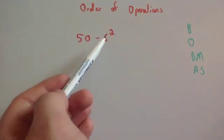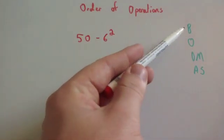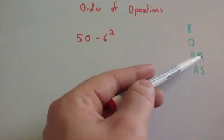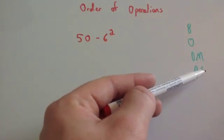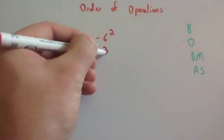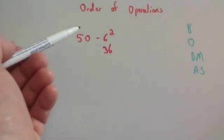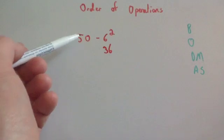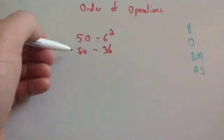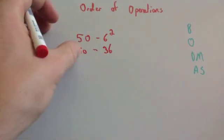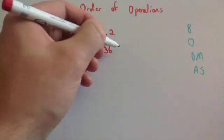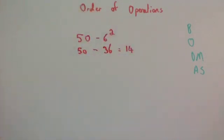This time we've got 50 subtract 6 squared. There are no brackets, but we do have an order — we've got a squared. There's no division or multiplication, and then we have a subtraction. So first we do 6 squared, which is 36. Then include the rest of the sum: 50 subtract 36 is equal to 14. So the answer is 14.